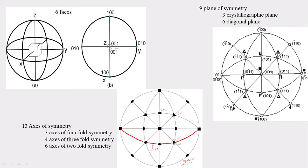There are four axes of 3-fold symmetry, and for 3-fold symmetry they use a triangle symbol. So this is the first, this is the second, this is the third, and this is the fourth — these are the four axes of 3-fold symmetry.